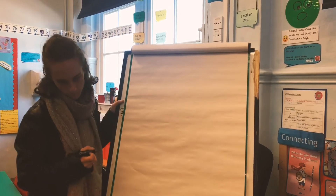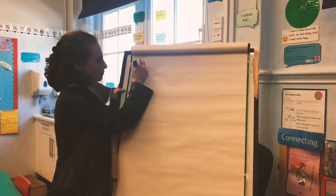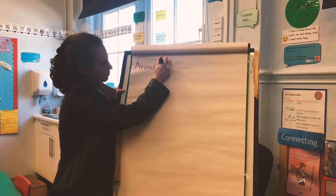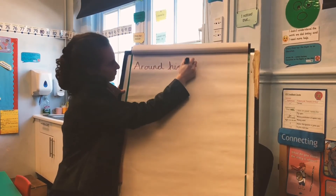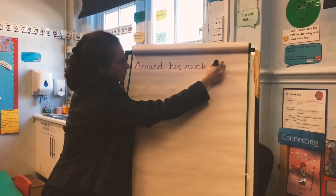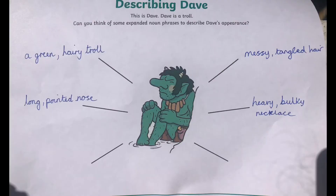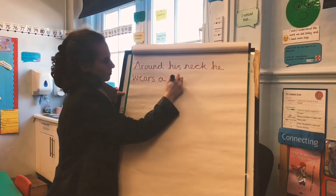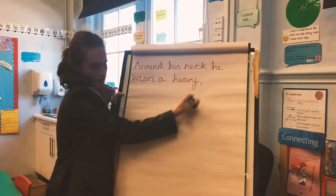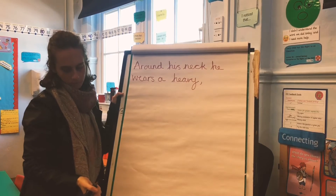Now I'm going to move on to writing a little bit about what he's wearing. I'm going to start with 'around his neck he wears' and then have a look at my expanded noun phrases. I'm going to choose 'a heavy, bulky necklace' because that's what I saw in the picture. Don't forget your comma.